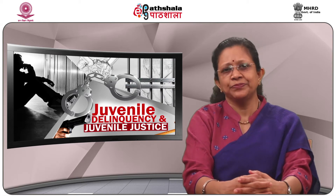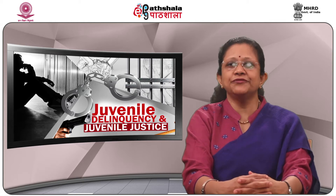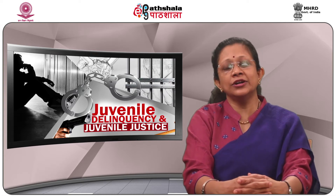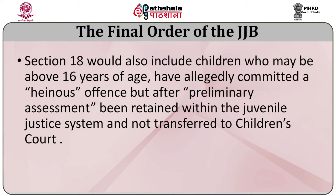Regarding the final order and age of the child: the age of the child is an important factor as procedures are dependent upon it. Section 94 of the Juvenile Justice Act 2015 explains the procedures and determination of age. For all children below 16 years of age, Section 18 of the Juvenile Justice Act will apply irrespective of the nature of offences. Section 18 will also apply for all children who have not completed 18 years of age in cases of petty and serious offences, meaning Section 18 applies to a large majority of children within the juvenile justice system.